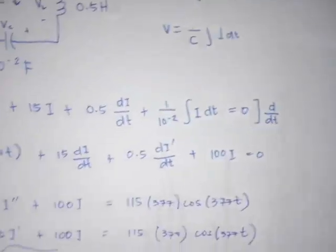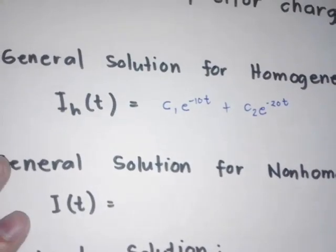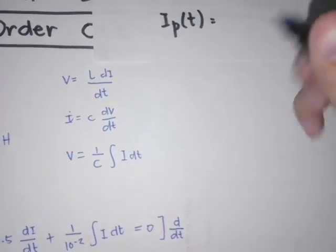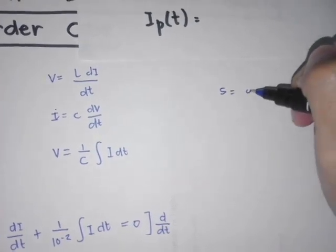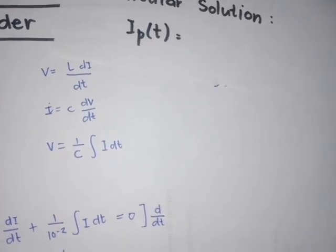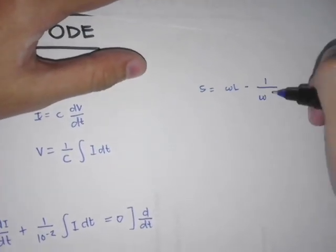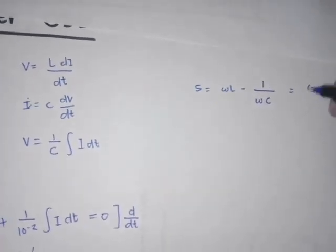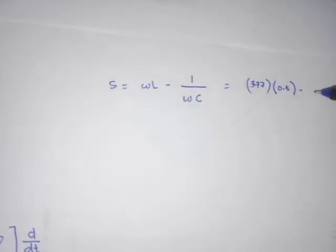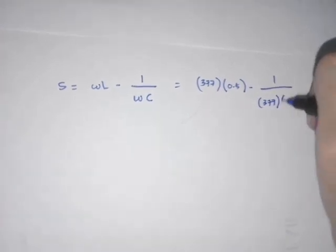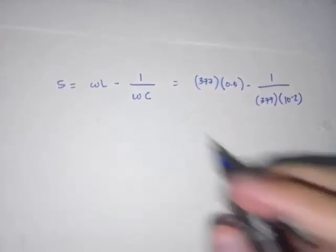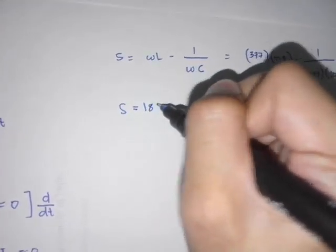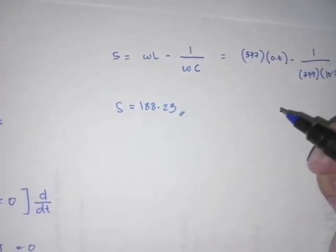Now we will find the particular solution. In finding the particular solution, we first need to find the reactance. S equals omega times L minus 1 over omega times C. Here omega is 377, so S equals 377 times 0.5 minus 1 over (377 times 10 to the negative 2). The reactance is 188.23.